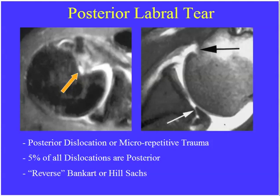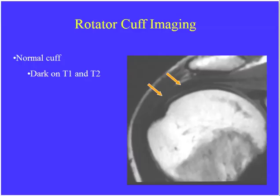Contrast or fluid coming deep to the posterior labrum represents a posterior labral tear. This can occur secondary to either dislocation or repetitive microtrauma, as in weight lifters doing bench pressing. In summary: they'll show a Bankart or reverse Bankart, possibly a Hill-Sachs lesion, and you should distinguish between anterior and posterior dislocation. With the rotator cuff, almost every exam had a question about it.